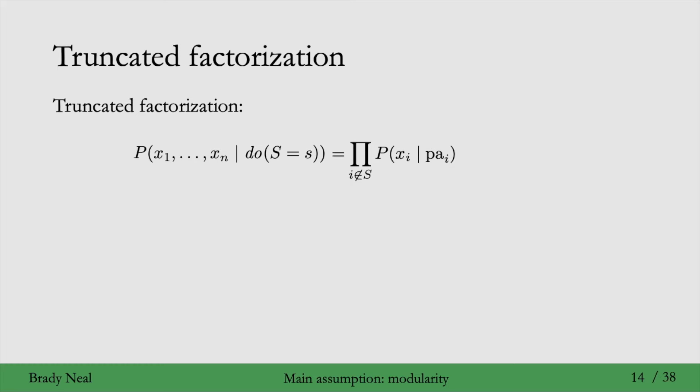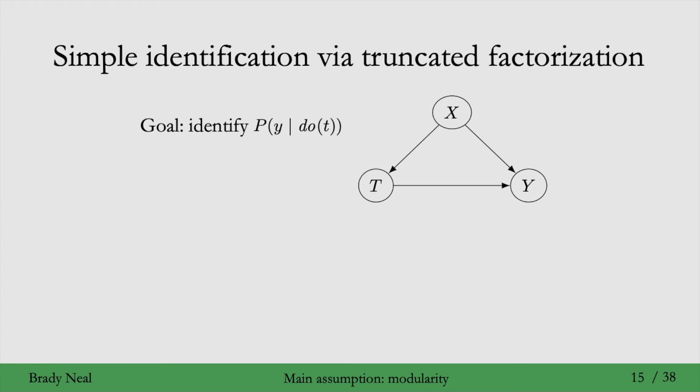That's because all of those terms become one if x is consistent with the intervention, and at least one of them becomes zero if x is not consistent with the intervention, and that would make the whole expression zero. So that's the justification for the truncated factorization. And now let's see what consequences this gives us right away.